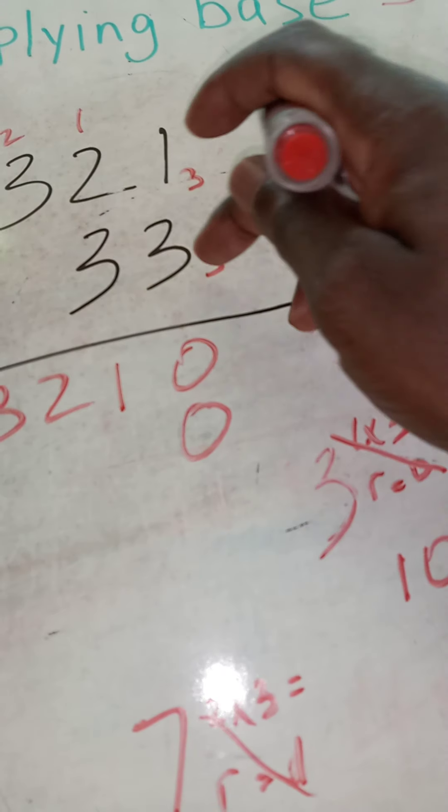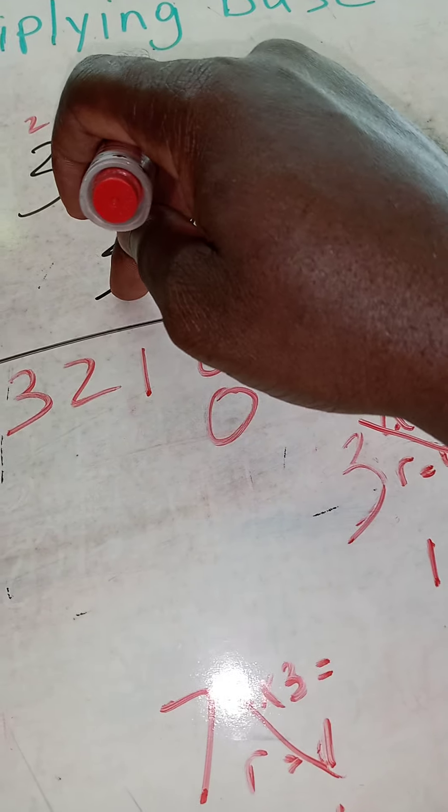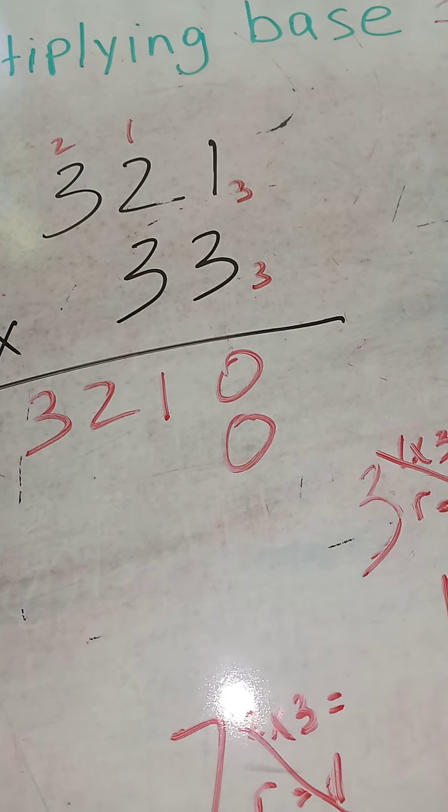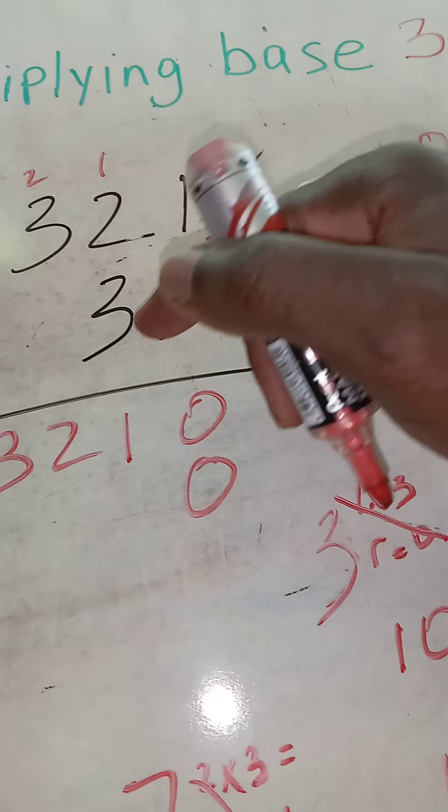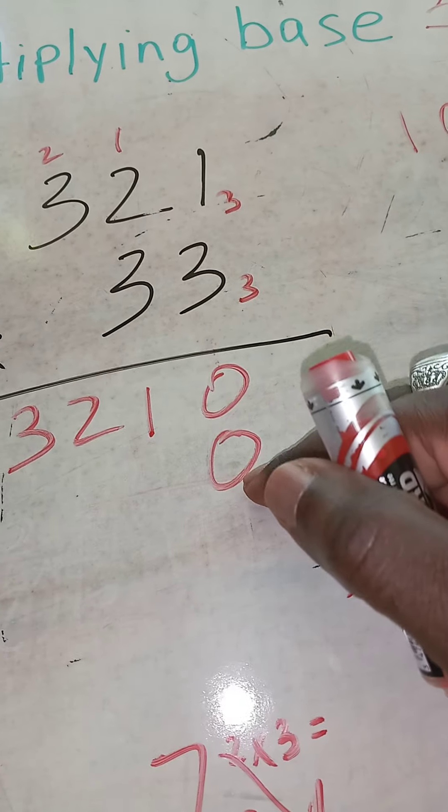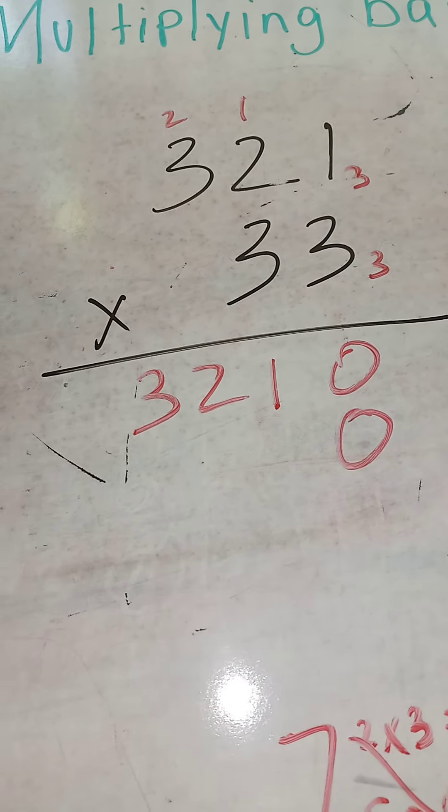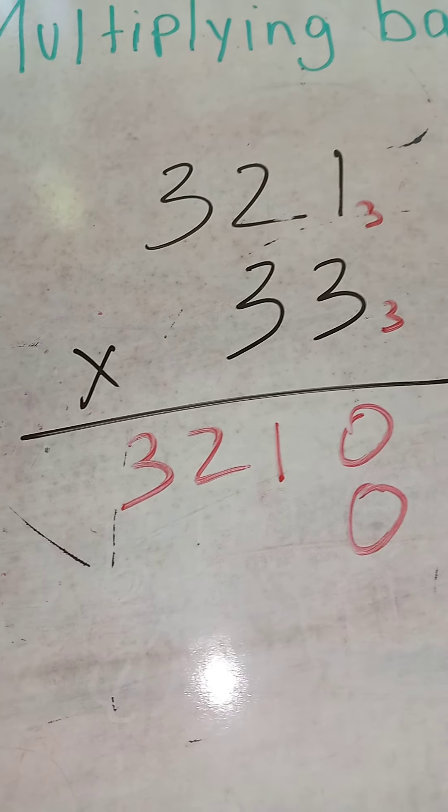Put a 0 because we're no longer dealing with the ones column, we're moving to the tens column. Remember you only have one zero beside a 10, so you put a 0 here. Then you're going to start multiplying. 3 times 1 is 3, can't write 3.